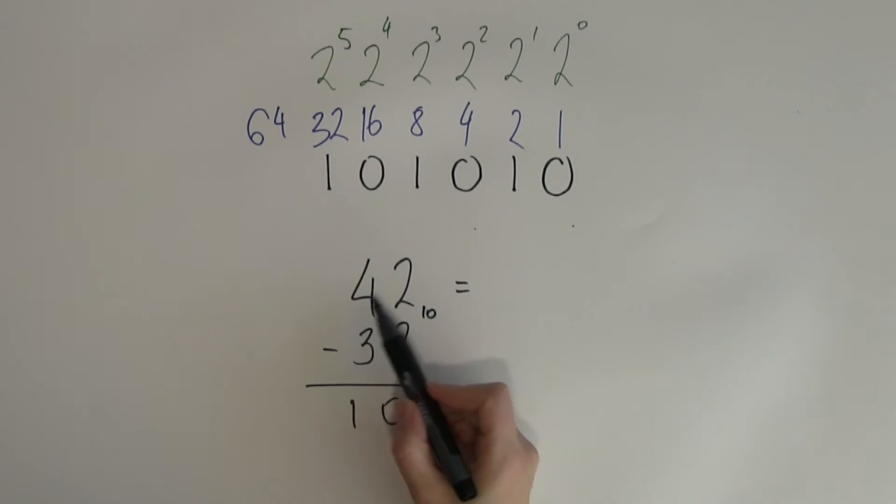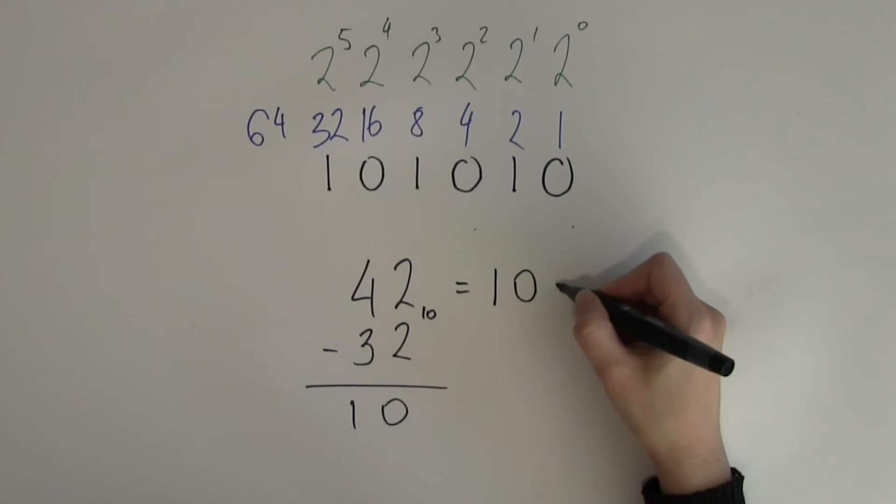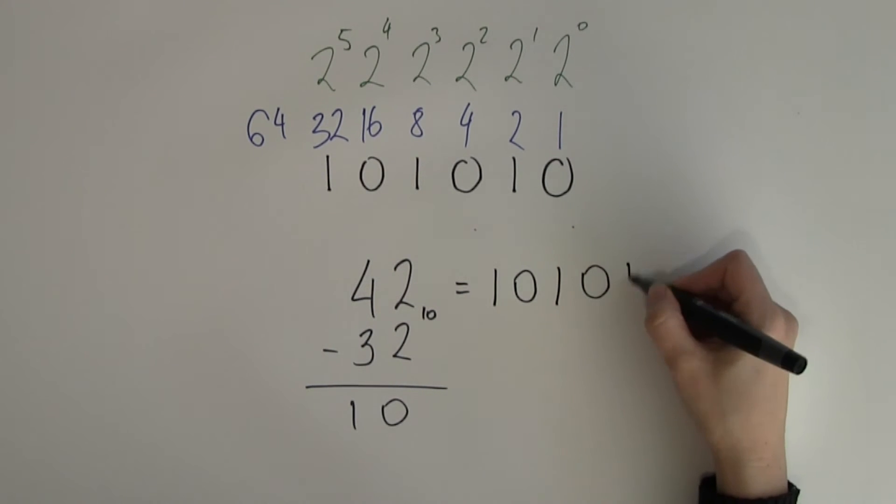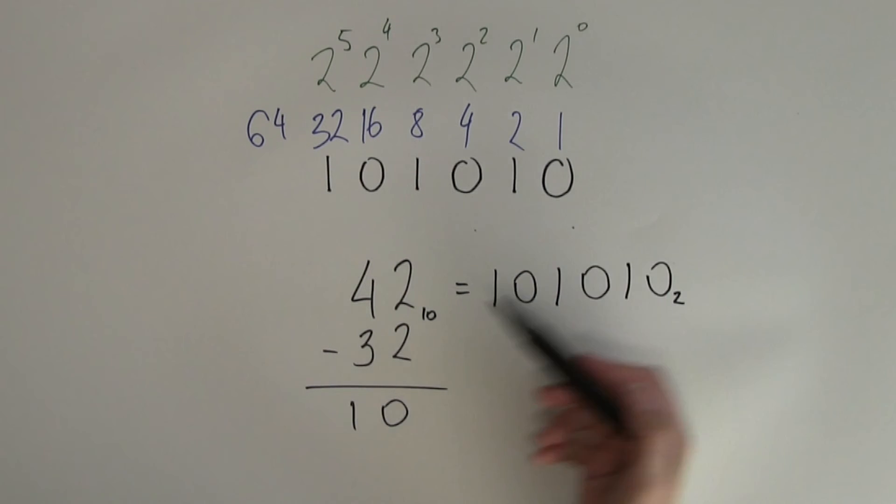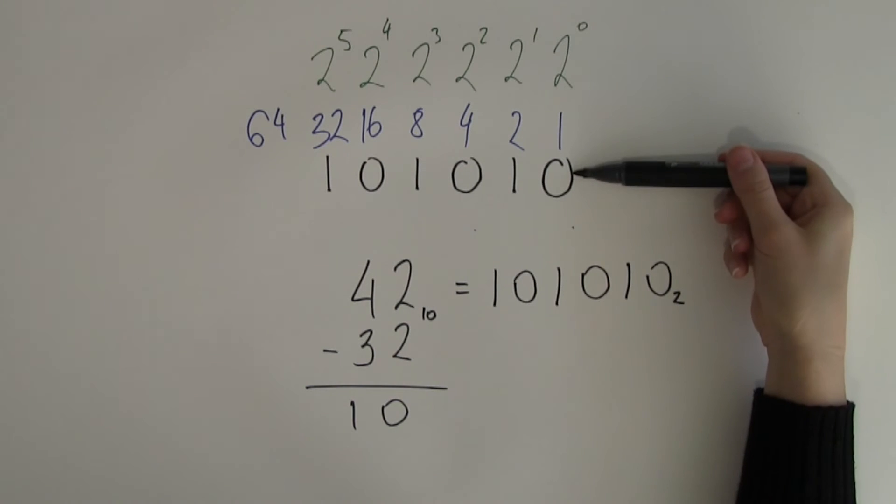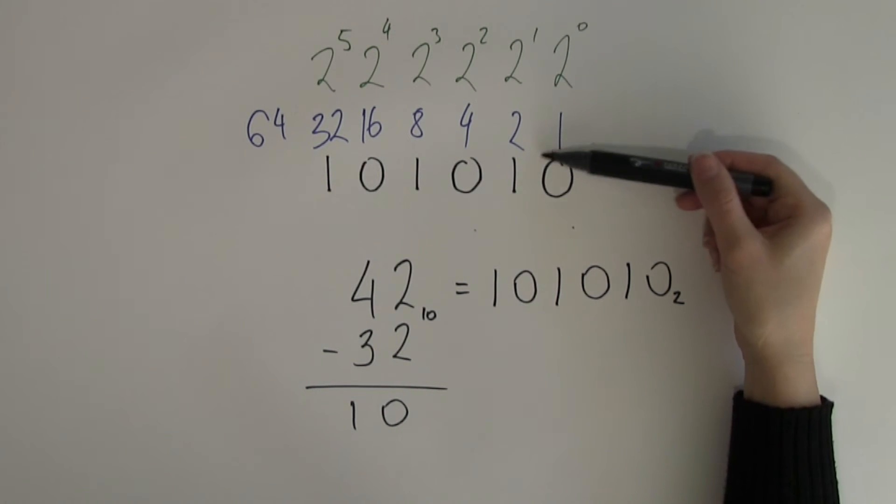Therefore, 42 in decimal is 1, 0, 1, 0, 1, 0 in binary. And again, 42 is an even number, so I'm expecting my last digit, the 1, to be 0.